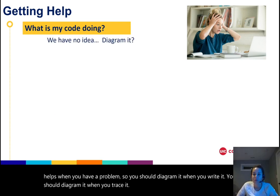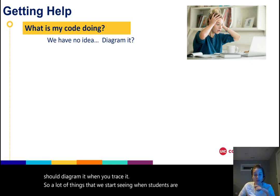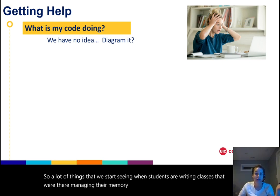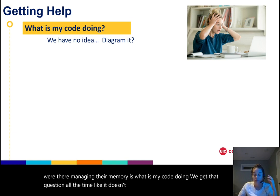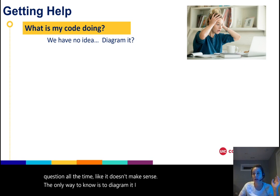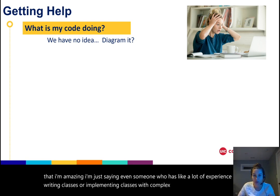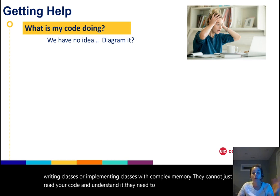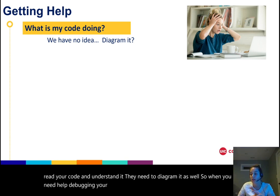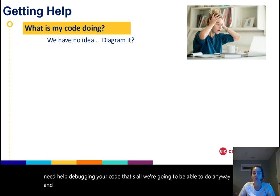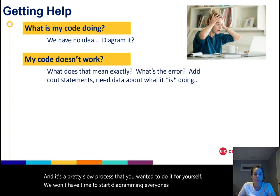So a lot of things that we start seeing when students are writing classes where they're managing their memory is, 'What is my code doing?' We get that question all the time. The only way to know is to diagram it. I'm not trying to say that I'm amazing, I'm just saying even someone who has a lot of experience writing classes or implementing classes with complex memory cannot just read your code and understand it. They need to diagram it as well. So when you need help debugging your code, that's all we're going to be able to do anyway, and it's a pretty slow process, so you want to do it for yourself. We won't have time to start diagramming everyone's code if your code doesn't work.